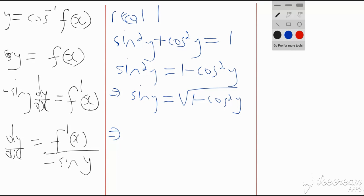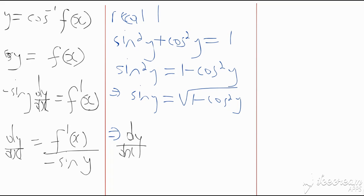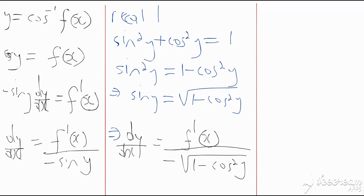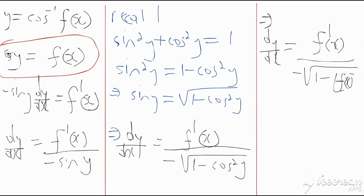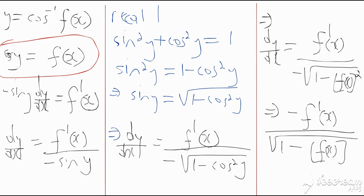This implies that dy/dx = f′(x) / (−√(1 − cos²(y))). Going back, we know that cos(y) = f(x), so this becomes dy/dx = f′(x) / (−√(1 − [f(x)]²)), or equivalently, dy/dx = −f′(x) / √(1 − [f(x)]²). That is the general rule for differentiating y = cos⁻¹(f(x)).